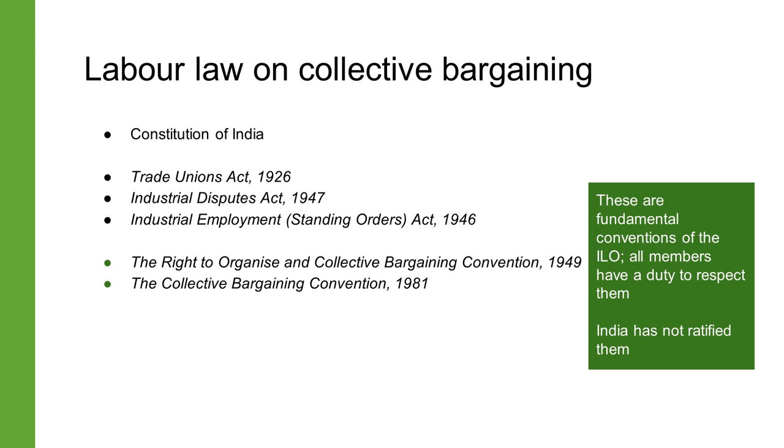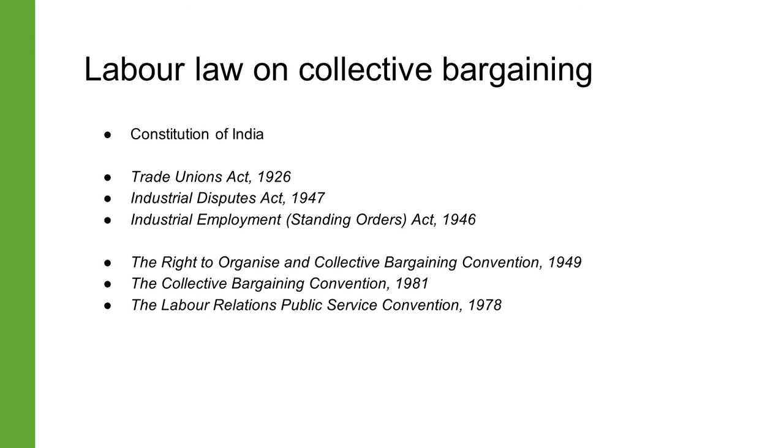The Labour Relations (Public Service) Convention of 1978, also not ratified by India, extends some of these guarantees to those employed by public authorities. In this video we have learned about the objectives and sources of labor law, and how it regulates collective bargaining between employers and workers. We must keep in mind that most Indian statutes apply only to specific types of work or establishments, and that informal or non-regular work arrangements do not ordinarily receive these protections. We will continue to learn how labor law regulates other aspects of work such as wages in the next video.